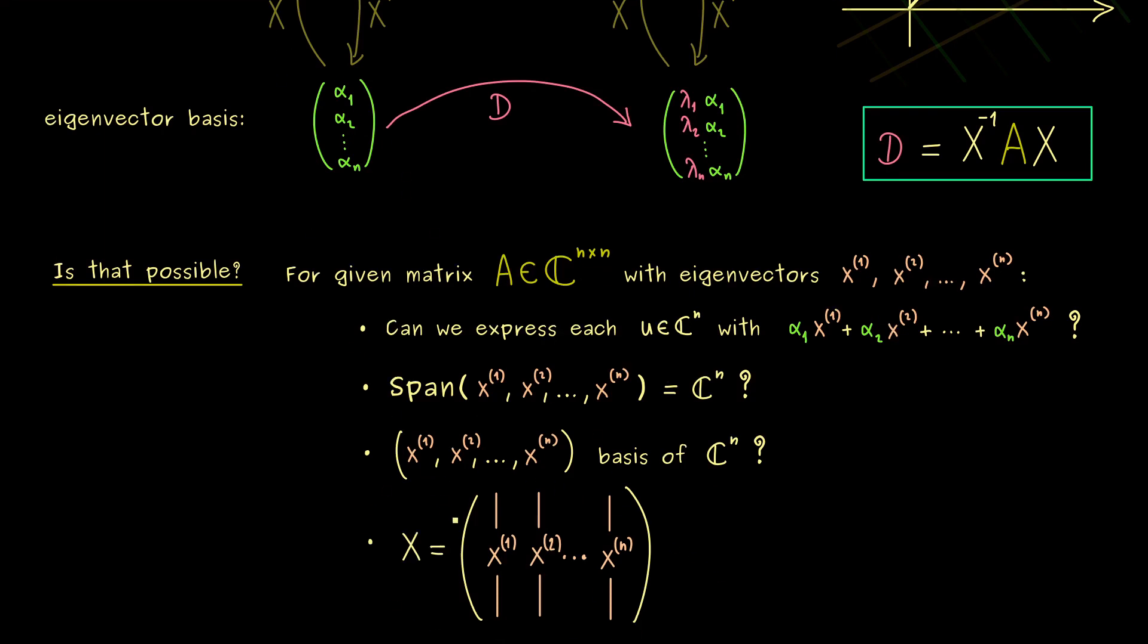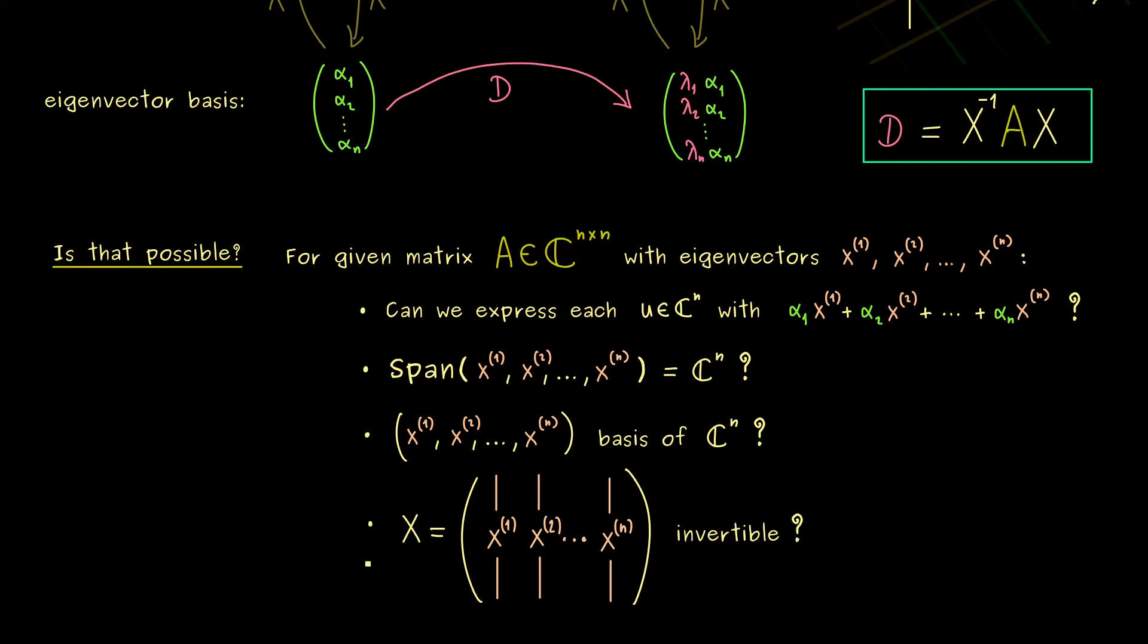then this matrix has to be invertible, if and only if these vectors form a basis. In other words, we can also state the question here as, is X invertible? And of course, also here we see, we need this for the diagonalization.